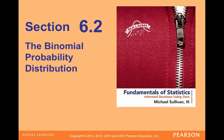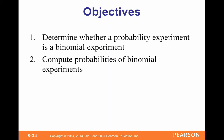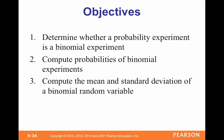So bi is a Latin prefix for two, and that's going to be a big thing here. We're going to look at experiments with two outcomes. We're going to determine whether our experiment is binomial or not, and then we're going to compute probabilities from that binomial experiment, and then compute the mean and the standard deviation of that binomial random variable.